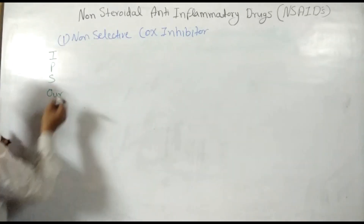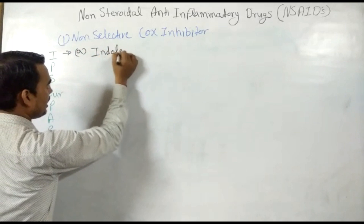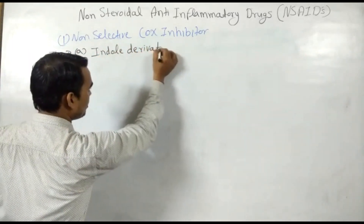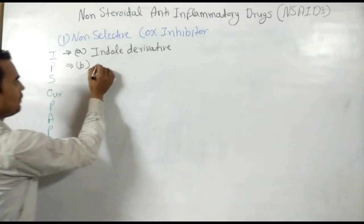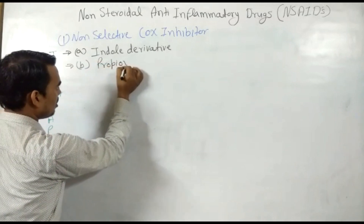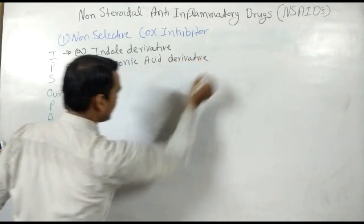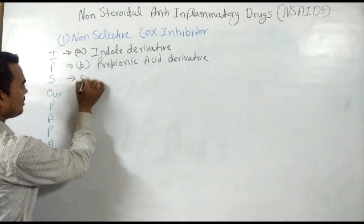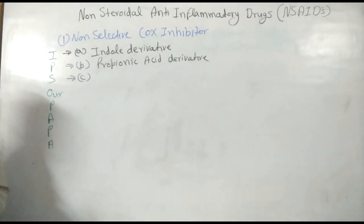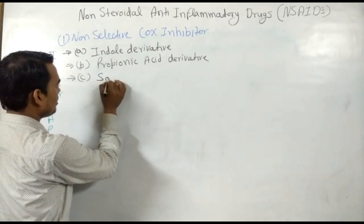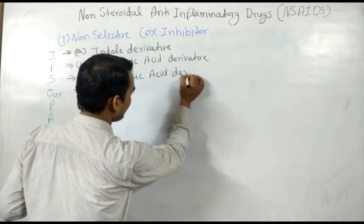Let me show you here. 'I' is for the first subclass: Indole derivative. 'P' is for the second subclass: Propionic acid derivative. 'S' is for the third subclass: Salicylic acid derivative.